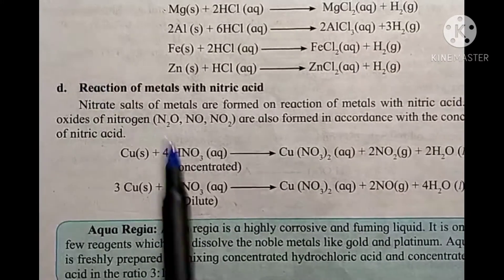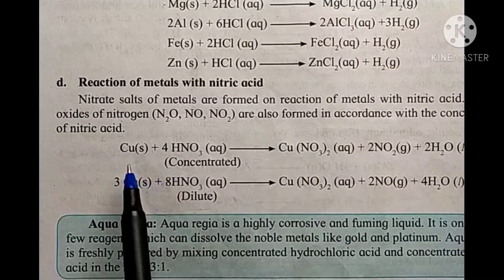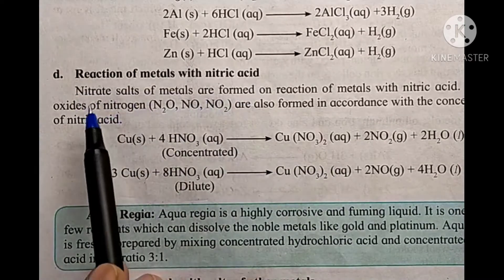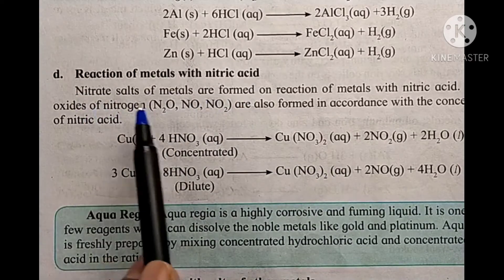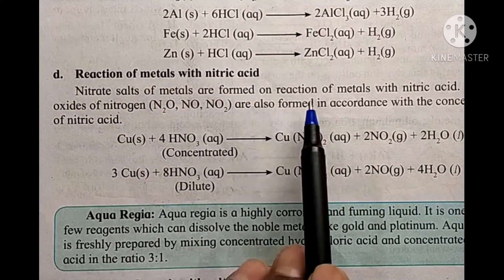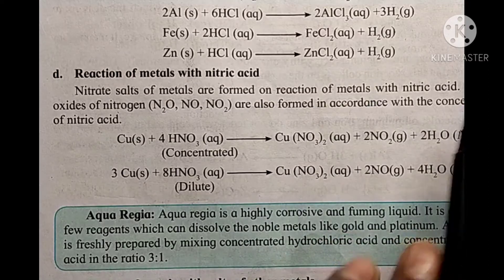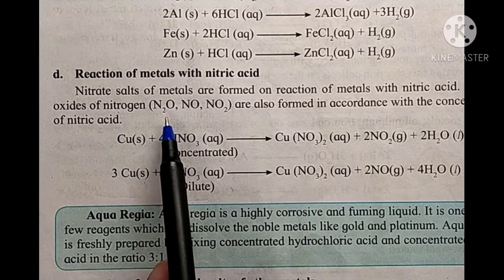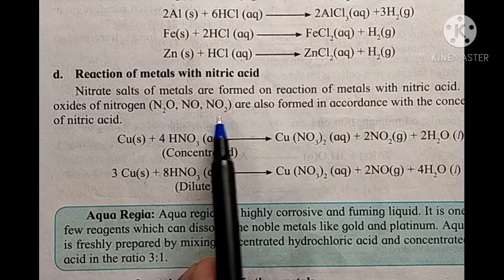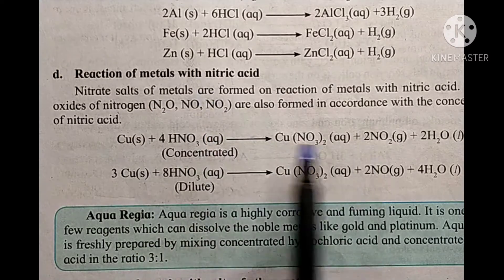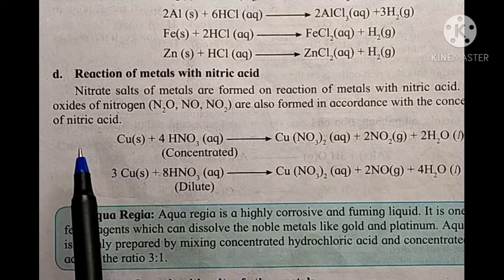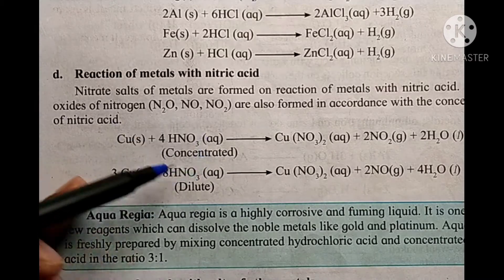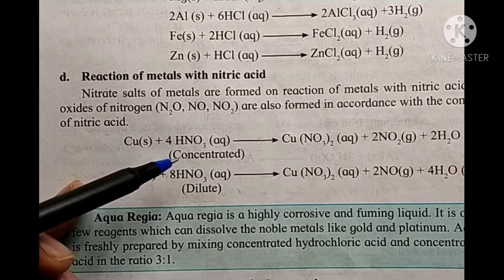Nitric acid metal reactions: nitrate salts of the metals are formed on the reaction of metals with nitric acid. Various oxides of nitrogen — N2O, NO, and NO2 — are also formed according to the concentration of nitric acid (HNO3).